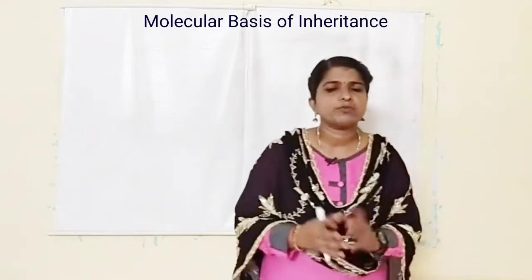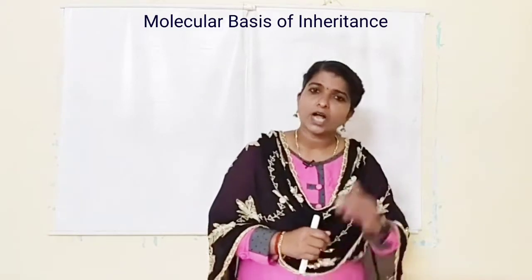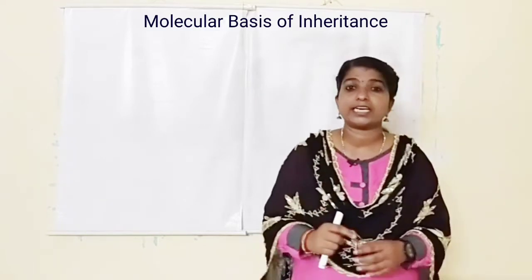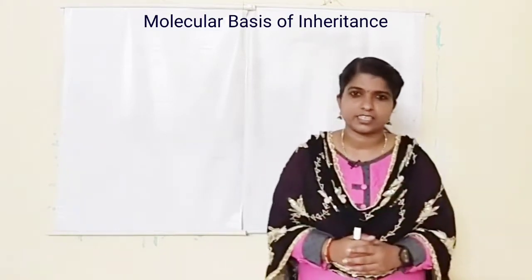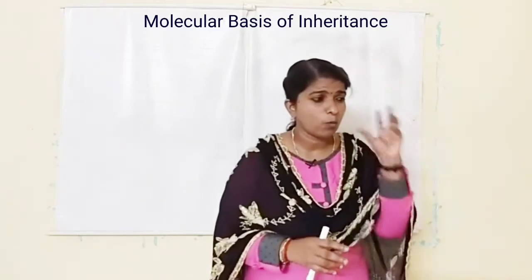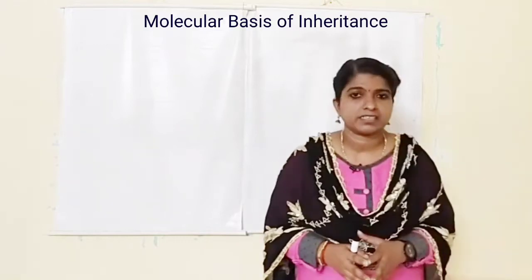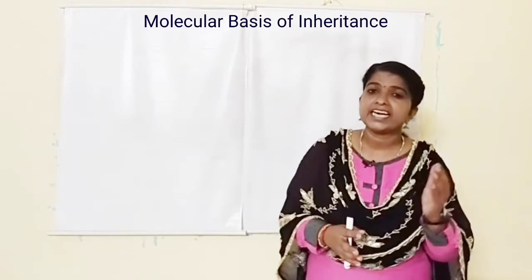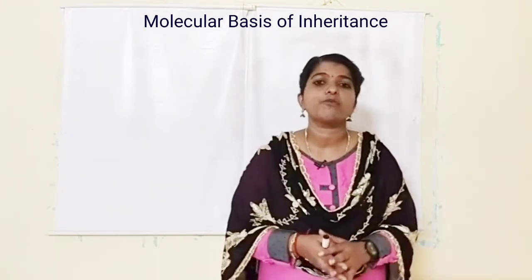In the previous chapter we learnt the inheritance pattern. According to Mendel, there are certain discrete units called factors which control the characters. But at that time we could not identify exactly what these factors are. Later investigations proved that DNA is the genetic material in the majority of organisms.